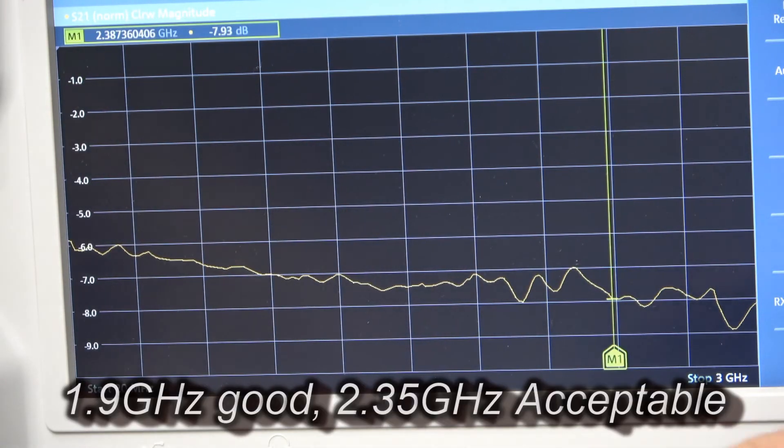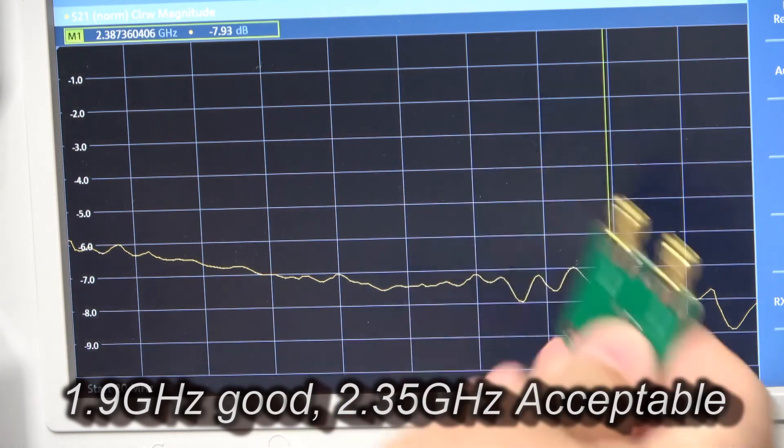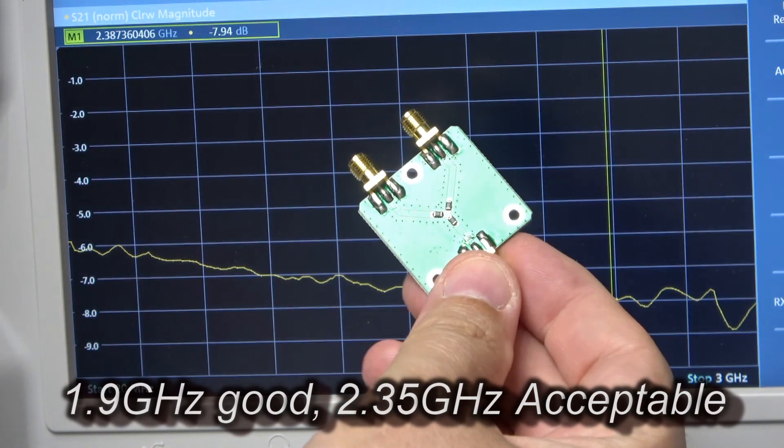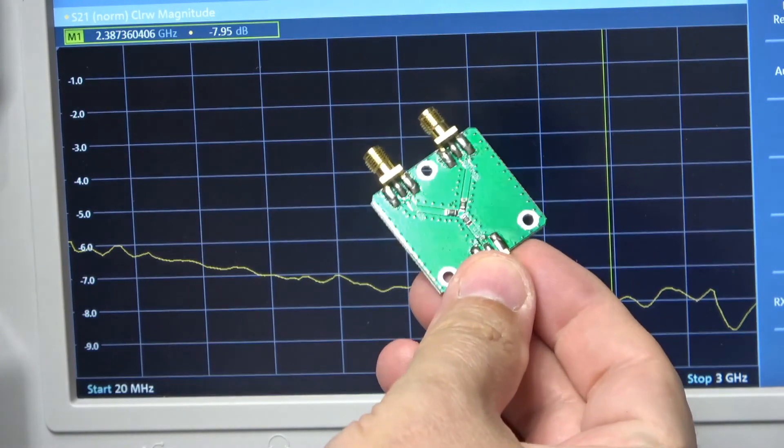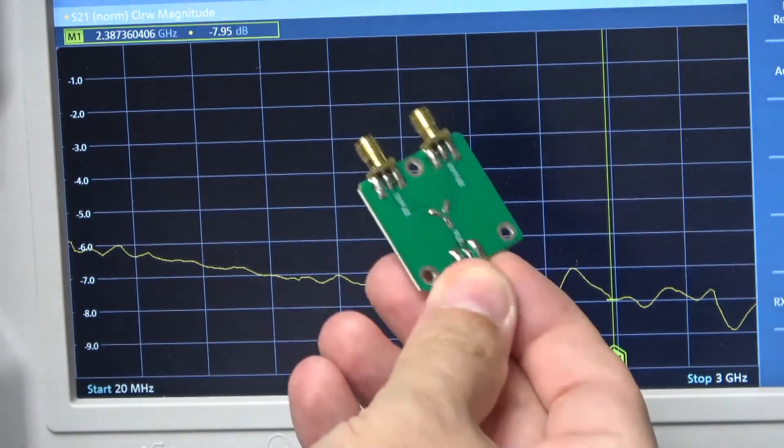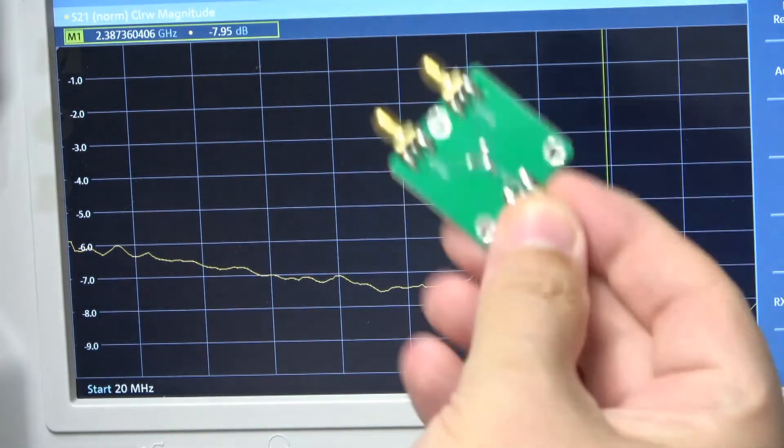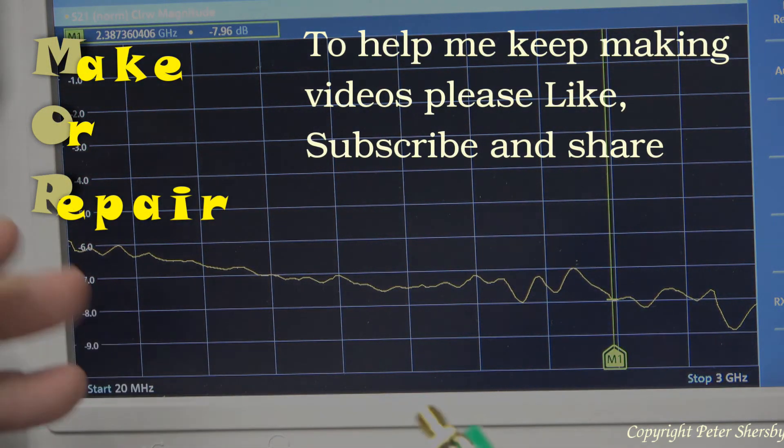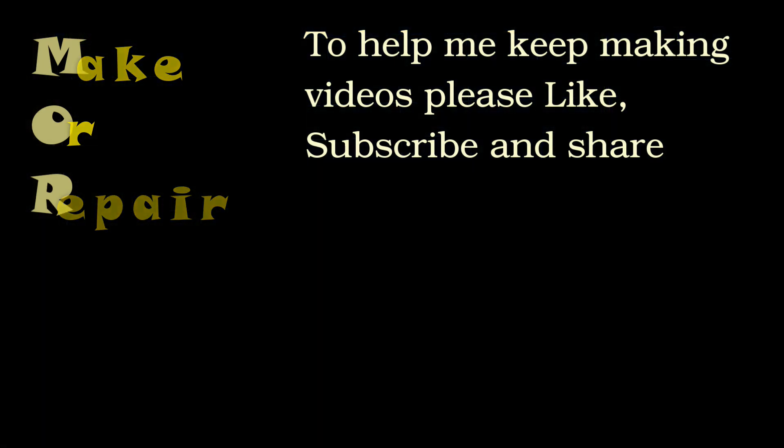That's it really. 2.3 to 2.4 gigahertz is really the effective bandwidth of these devices, not 5 gigahertz as advertised. I mean you could argue that it does go toward 5 gigahertz but its performance is pretty poor by the time you get there. Hope you enjoyed that. If you did please thumbs up, subscribe if you haven't done so, and I'll put the link to the original video below.